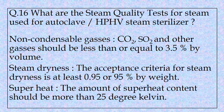Question number sixteen: What are the steam quality tests for steam used in autoclave or HPSP steam sterilizer? Three main tests are taken for checking steam quality: the non-condensable gases test, steam dryness test, and superheat test. For non-condensable gases such as carbon dioxide and sulphur dioxide, their content should be less than or equal to 3.5% of the volume. The acceptance criteria for steam dryness is at least 0.95 or 95% by weight. For superheat, the amount of superheat content should be less than 25°K.